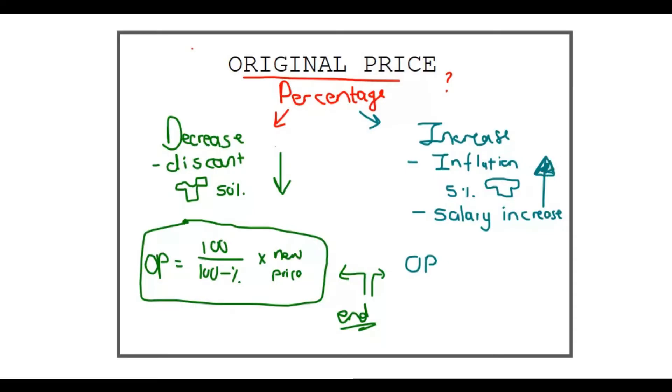Then you would use kind of the same formula, the only difference being now I add a plus on this side. So it's 100 plus that percentage, and then you multiply it with the new price or the new amount. Remember these formulas. Let's look at an example here.